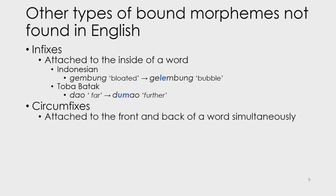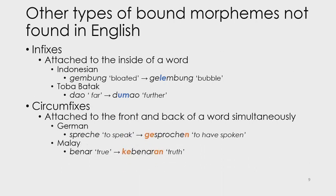Then we have circumfixes. These are attached to the front and back of a word at the same time. In German, sprechen means to speak, and gesprochen means to have spoken. And you don't actually have to look very far to find circumfixes — they are also found in our local language, Malay. Benar, for example, means true. And when ke- and -an are added to the front and back of the word, we derive the word for truth: kebenaran.